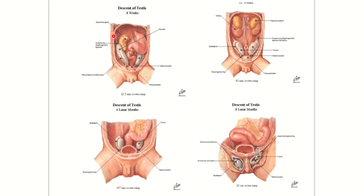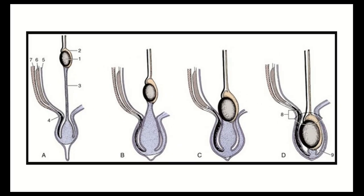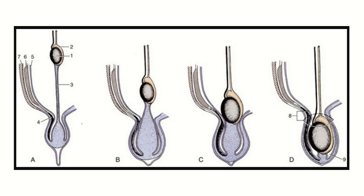This picture also shows the descent of the testes. Initially the testes are present in the abdomen and finally they descend into the scrotum. Here we can see the gonad — in case of a male baby it is the testes. Both testes gradually go to their normal area, which is the scrotum. They descend further and finally enter the scrotum. Another picture shows the descent — this is the scrotum, and this structure from the lower pole of the testes to the scrotum is known as the gubernaculum. The gubernaculum shortens and the testes descend, finally entering the scrotum.